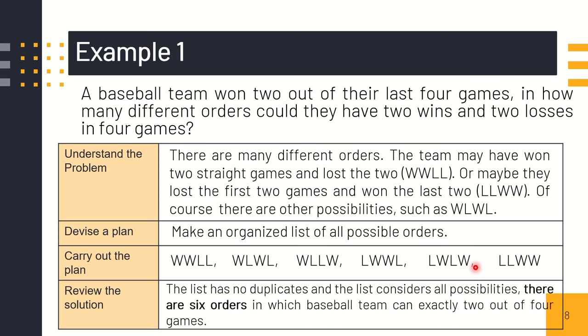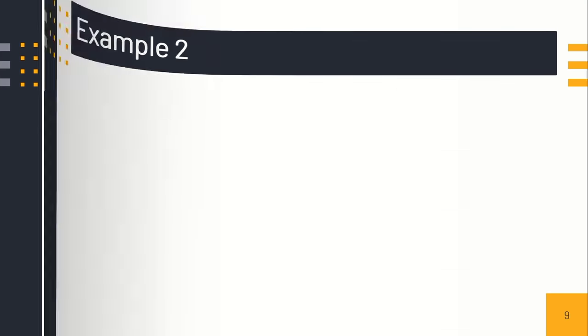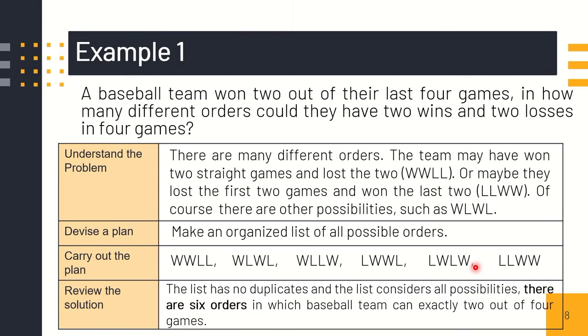Therefore, if we're going to check our answer, if this is correct, the list has no duplicates and the list considers all possibilities. Are there any other orders? No. Therefore, there are six orders in which a baseball team can win exactly two out of four games.